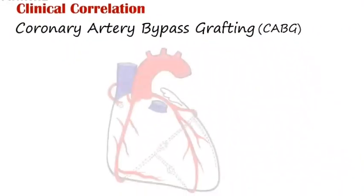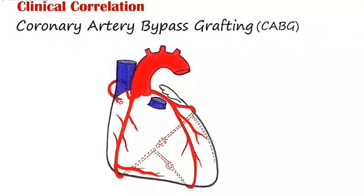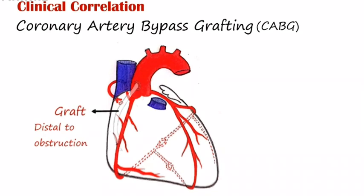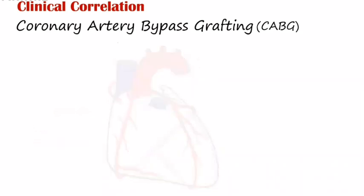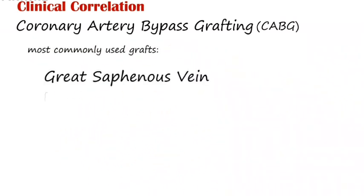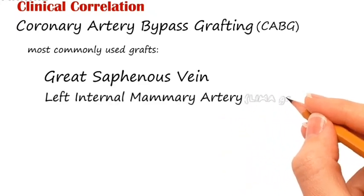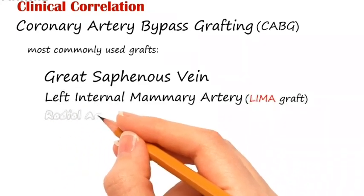In coronary artery bypass grafting, it is usually performed in patients with severe or unstable angina due to obstruction of the coronary artery. A segment of a vein or an artery is connected to the ascending aorta and then to the coronary artery distal to the obstruction. The most commonly used grafts are the great saphenous vein, the left internal mammary artery, and the radial artery.